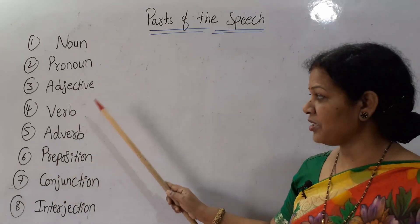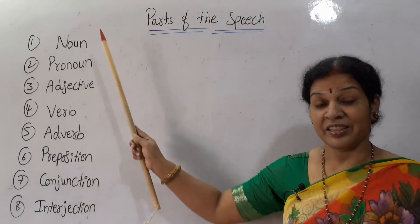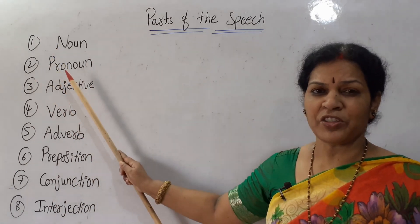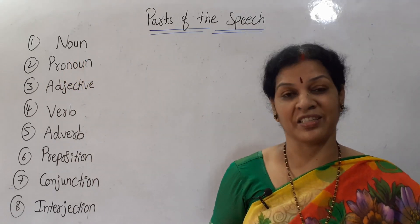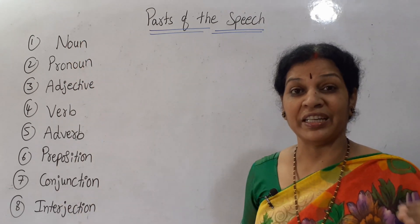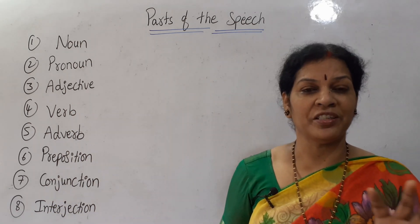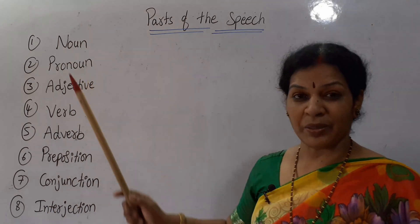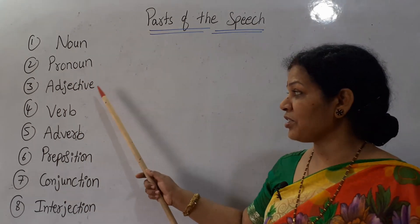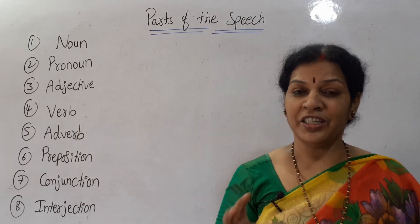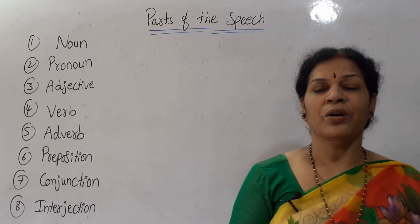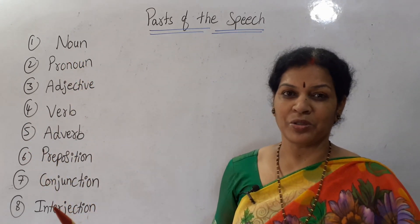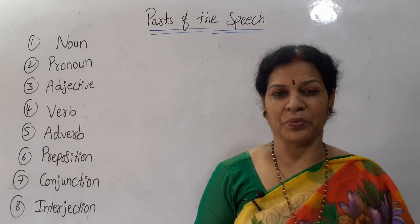Noun, pronoun, adjective, verb, adverb, preposition, conjunction, and interjection — these are the eight parts of speech. Today I'm giving an introduction to all eight. For each topic, like noun, there are different types which we'll see in depth in the next class. For each topic every class you'll have some exercises and also a quiz you have to attempt. In the same way, pronoun has different types, adjective, verb — different types of verb forms — and we are going in depth for each. Today's class will be only the introduction.